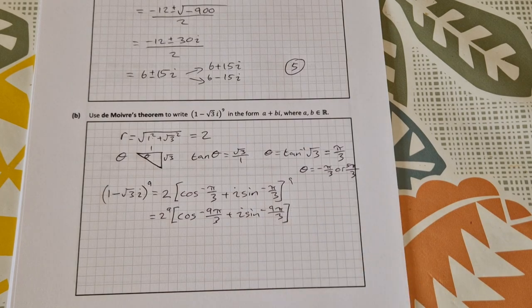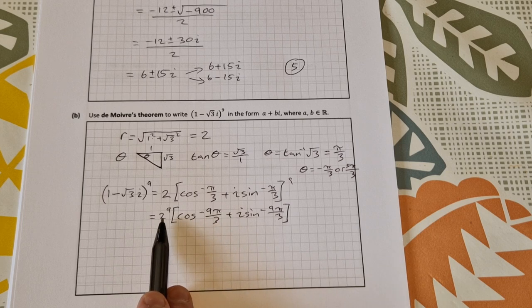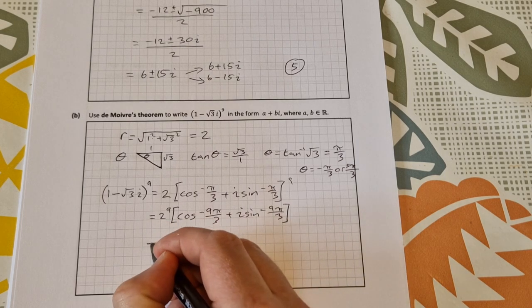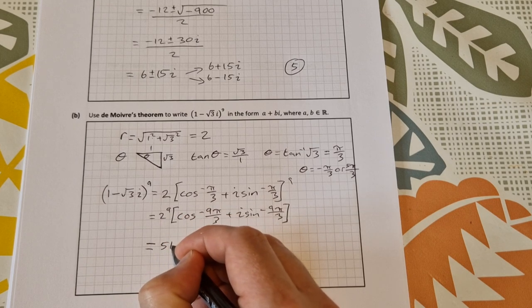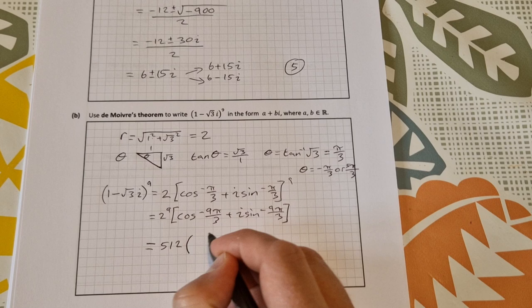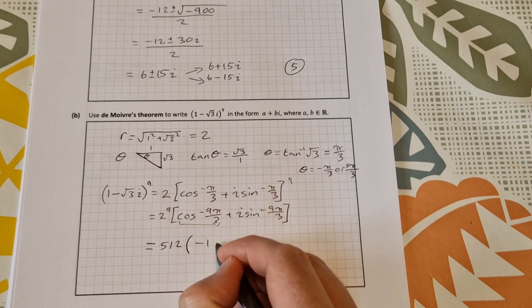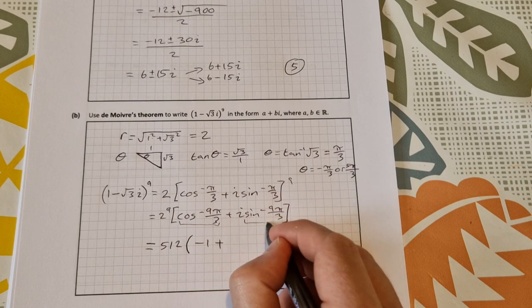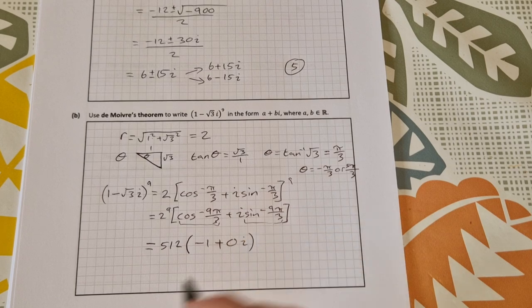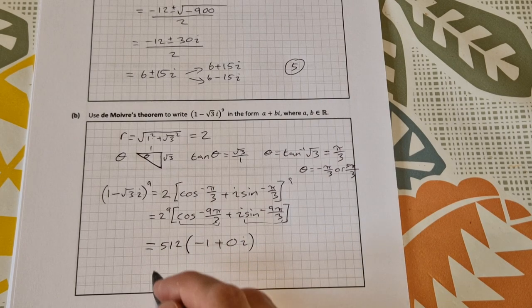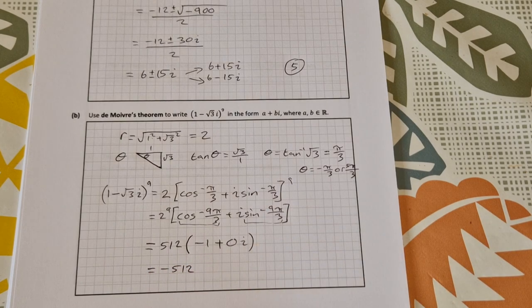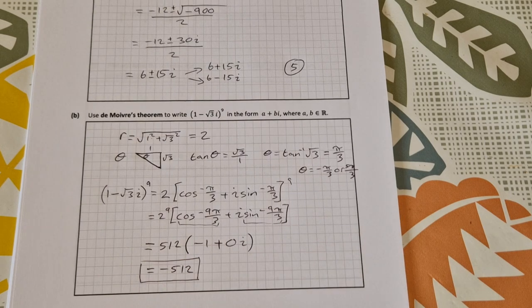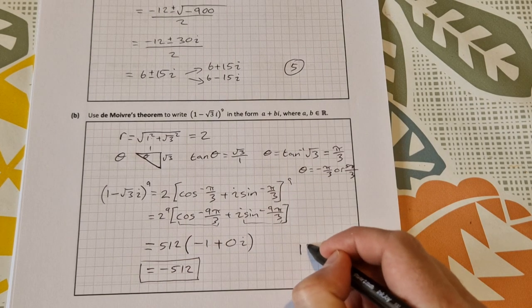And then all you need to do now is simplify, you can put it into your calculator, it'll be this times this, plus this times this. So, it works out to be 512 times, this works out to be minus 1, plus this works out to be 0, so it's 0 i, so it's just 512 times minus 1 is equal to minus 512, and then times 0 is 0, so your answer is minus 512. And that's worth 10 marks.